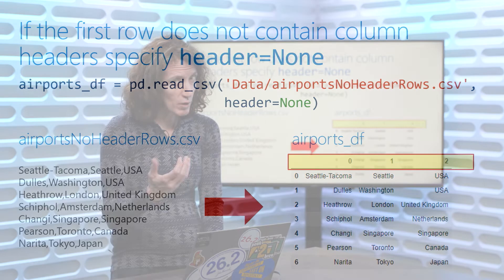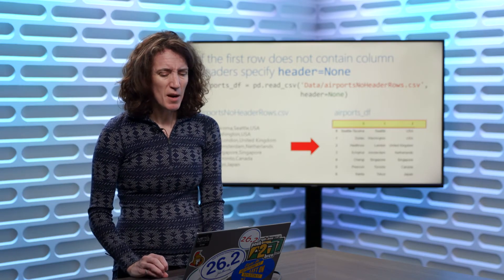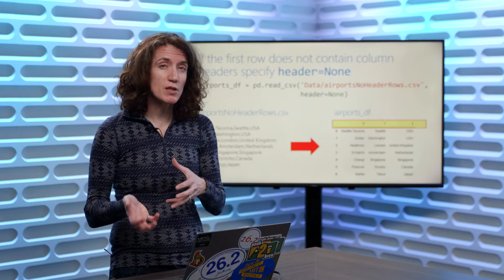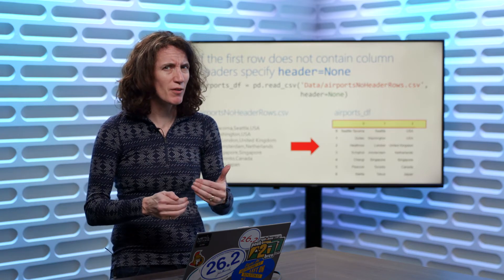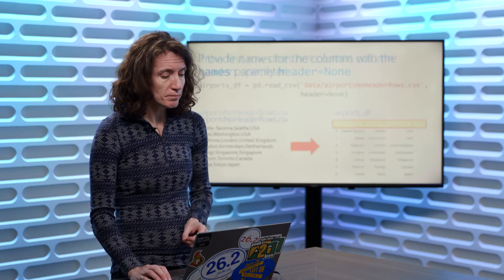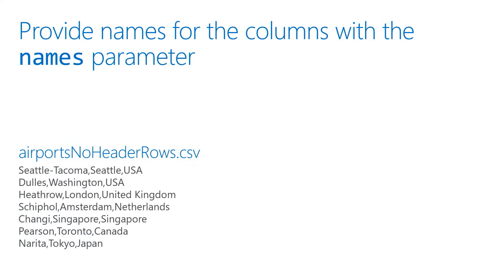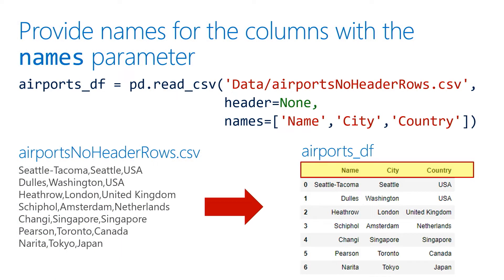So you need to know when writing Python code whether that CSV file has a header row or not. But you might have noticed when Christopher was writing code to query a data frame, it was really convenient to have names for your columns. That's okay — we can fix that as well. You can provide names for your columns by specifying the names parameter. So if we add a names parameter and say we want to use name, city, and country as the names for the three columns, you can see we successfully assigned names to each column when it created the data frame.